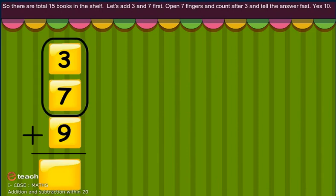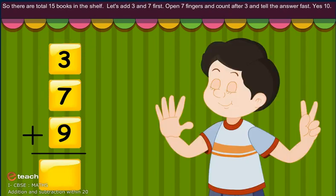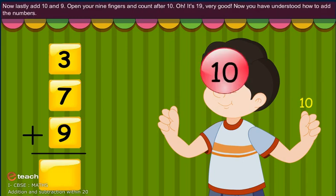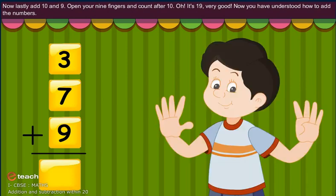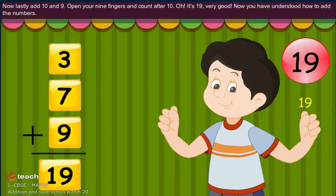Let's add 3 and 7 first. Open 7 fingers and count after 3 and tell the answer fast. Yes, 10. Now add 10 and 9. Open your 9 fingers and count after 10. Oh, it's 19. Very good!